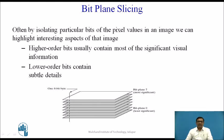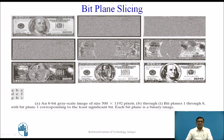By isolating particular bits of the pixel values in an image, we can highlight interesting aspects of that image. Higher order bits usually contain most of the significant visual information. Lower order bits contain subtle details — less information is present in the lower order bits. If we represent this input image using the least significant bit, we get very little information; the detail present in the original image is not captured.